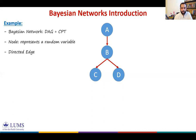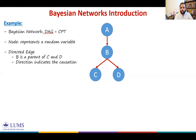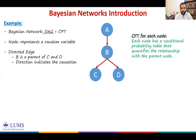Using directed edges, we use graph nomenclature: B is a parent of C and D, and A is a parent of B. The direction of the arrow indicates causation — A is a cause, B is an effect; B is a cause, C and D are effects. We also need a conditional probability table (CPT) for each node, quantifying the relationship with its parent node.